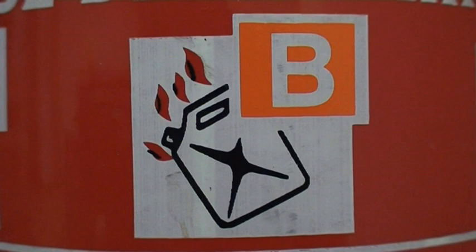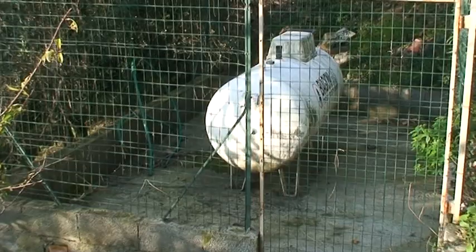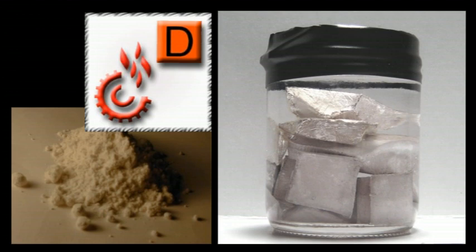Vengono definiti classe B i fuochi derivanti da liquidi, quali ad esempio benzina, alcol e solventi. Appartengono alla classe C tutti i gas come metano, GPL, idrogeno e acetileno. La classe D comprende i metalli combustibili come magnesio, alluminio, sodio e potassio. Considerazione a parte devono avere, per la loro particolarità, i fuochi di natura elettrica.